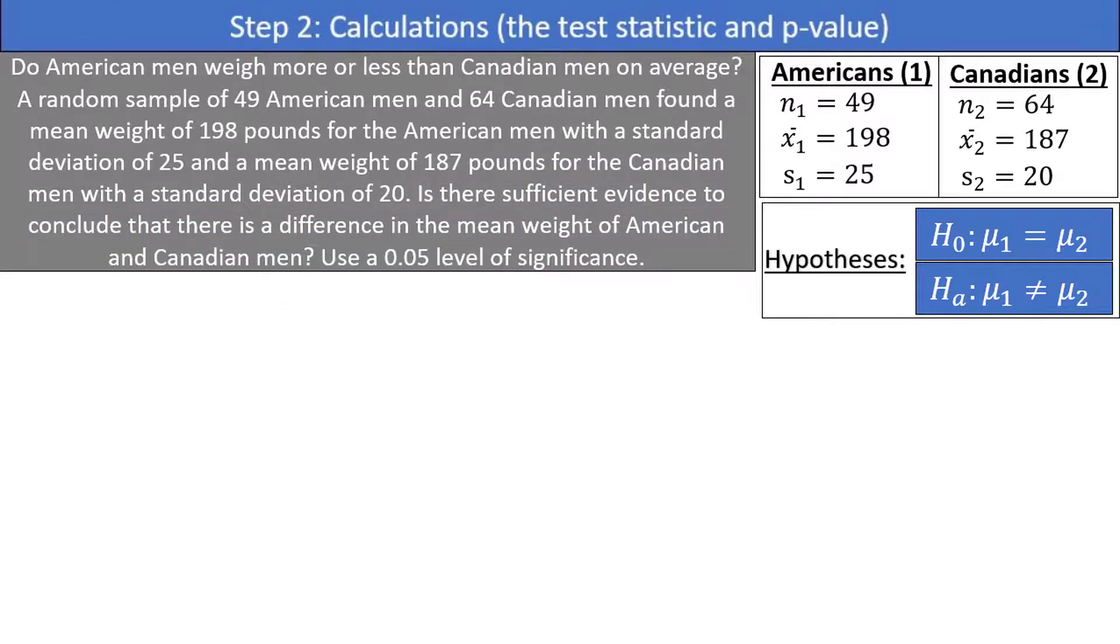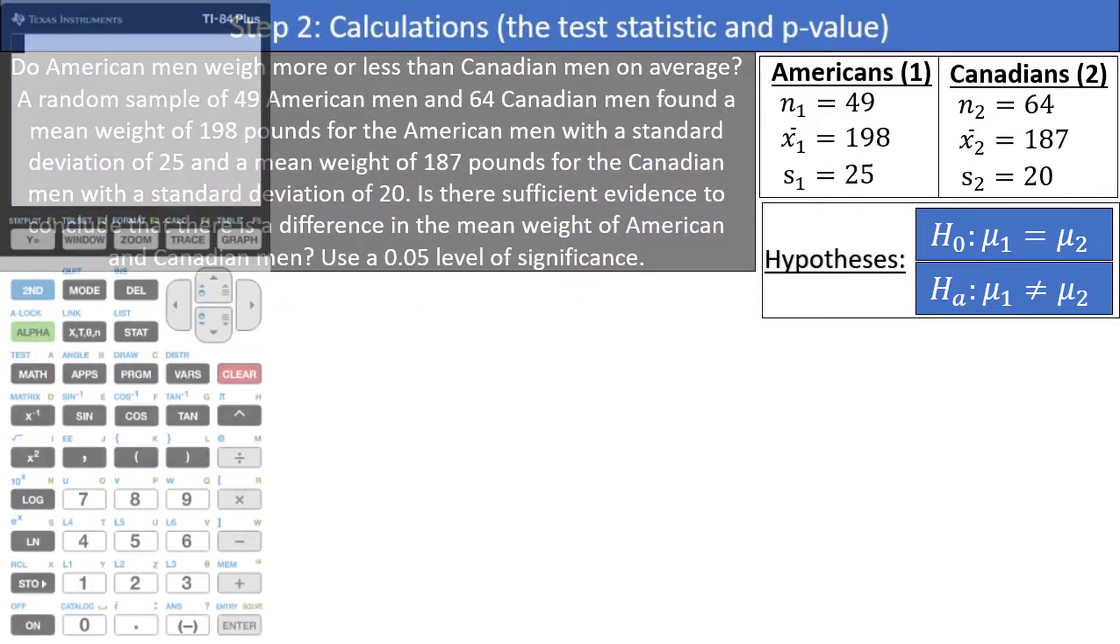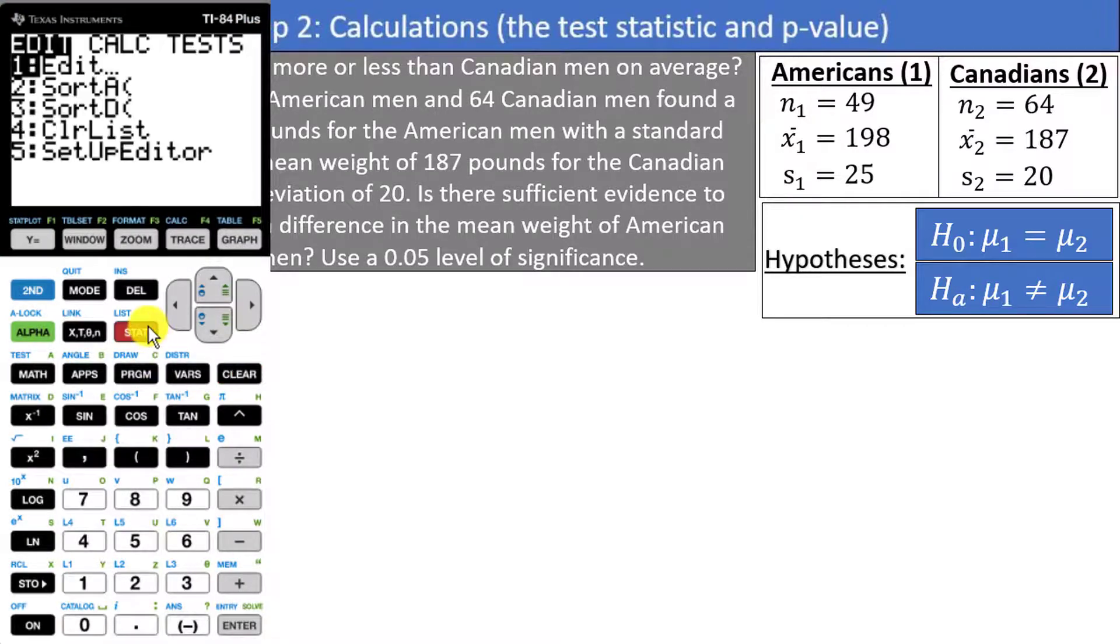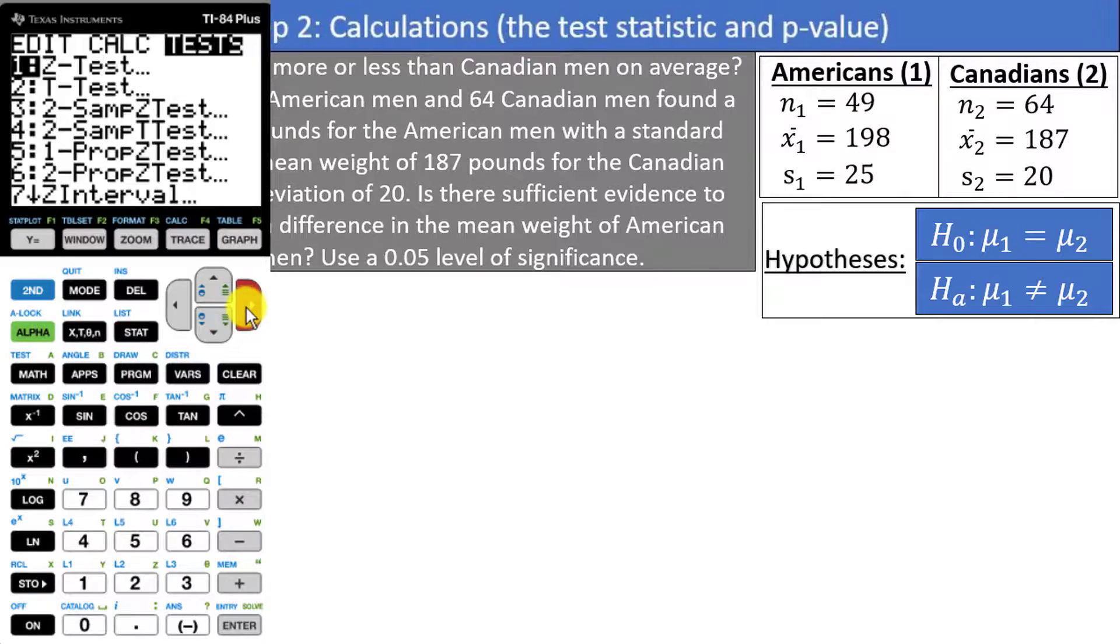Step 2. Calculations. This is where we get to use the TI-84 calculator. Press stat and arrow twice to the right to get to tests. Scroll down to 2 sample t test. Note that option 3 is the 2 sample z test, which you would use if you wanted to conduct the hypothesis test using the z distribution with known population standard deviations. As mentioned earlier, I don't use the z test approach as it is very unlikely for us to know the population standard deviations. Next press enter.